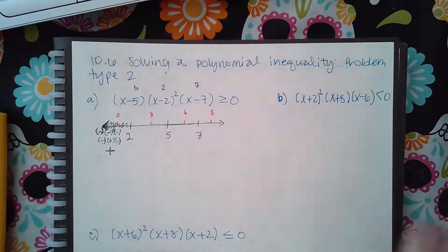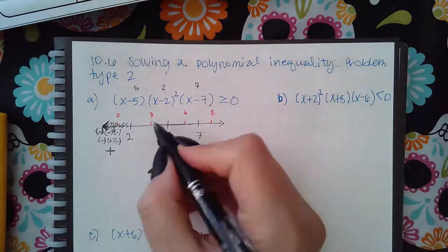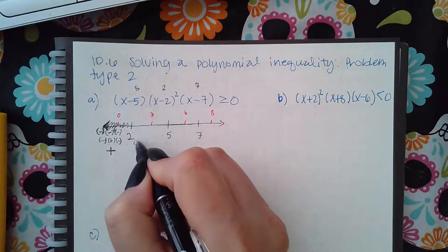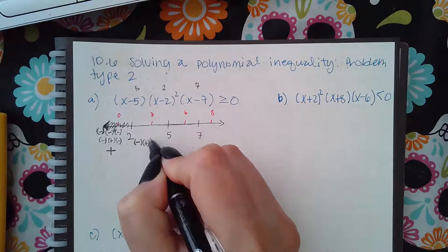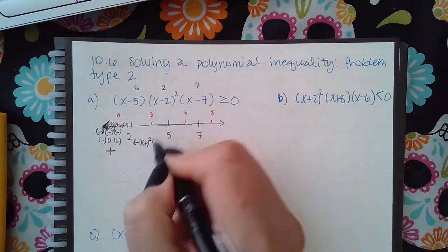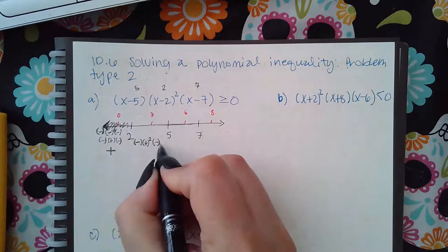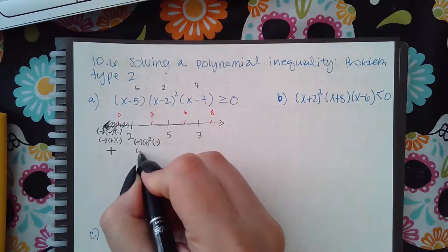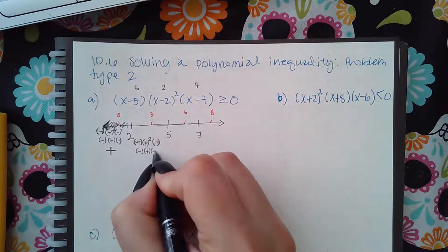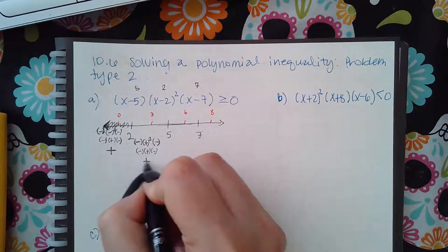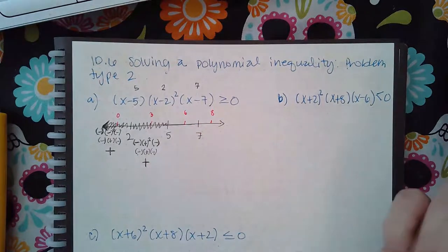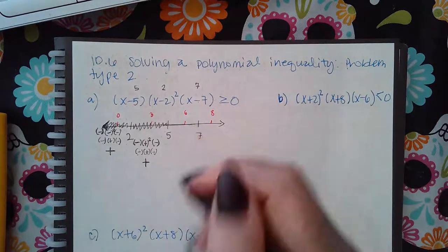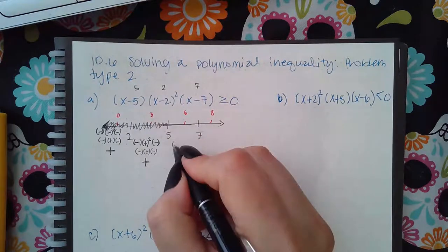Now let's test 3. When I plug 3 in, I get a negative for the first factor, a positive squared for the second factor, and a negative for the third. Squaring the positive keeps it positive, and a negative times a positive times a negative is ultimately positive. So this interval will also be included.